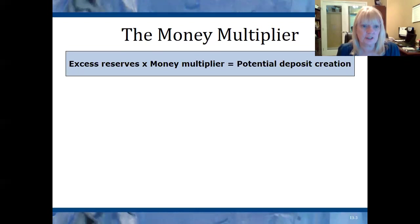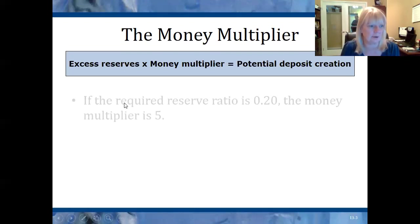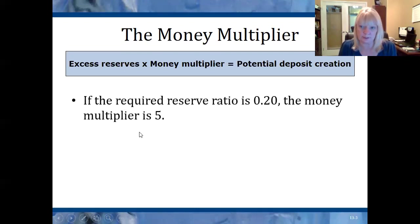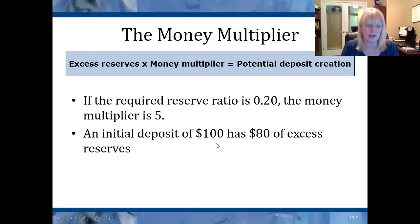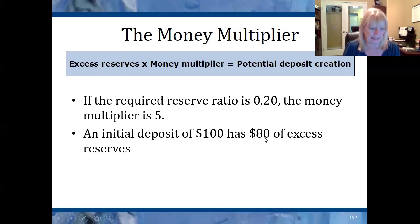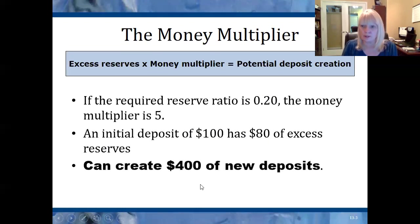Excess reserves times the money multiplier equals the potential deposit creation. Let's look at another example. If the required reserve ratio is 20%, the money multiplier is 1 divided by 0.20, which gives you 5. With an initial deposit of $100, 20% must be set aside as required reserves — that's $20 — leaving $80 of excess reserves. So the money multiplier, 5, times the excess reserves, $80, means we can create $400 in new deposits by the time this has gone all the way through the banking system.